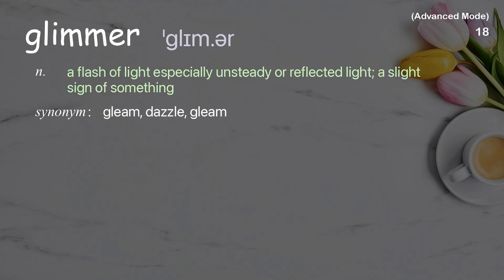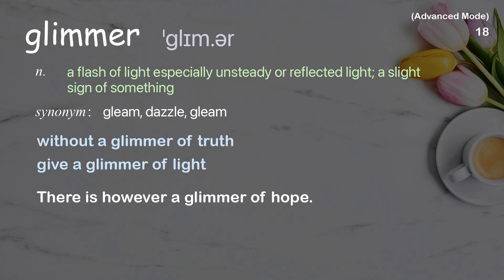Glimmer. A flash of light, especially unsteady or reflected light; a slight sign of something. Examples: Without a glimmer of truth. Give a glimmer of light. There is however a glimmer of hope.